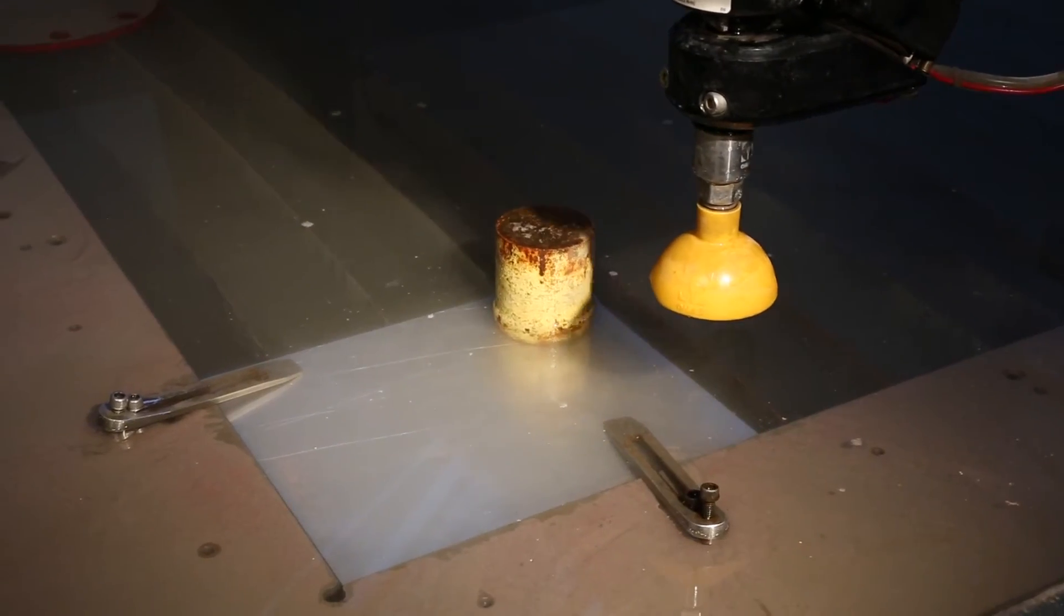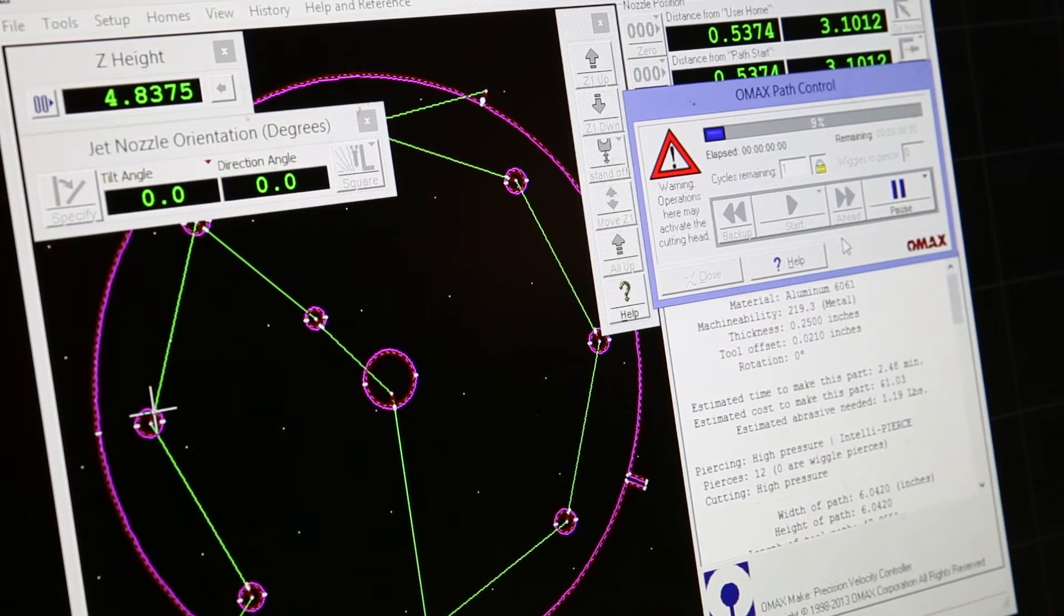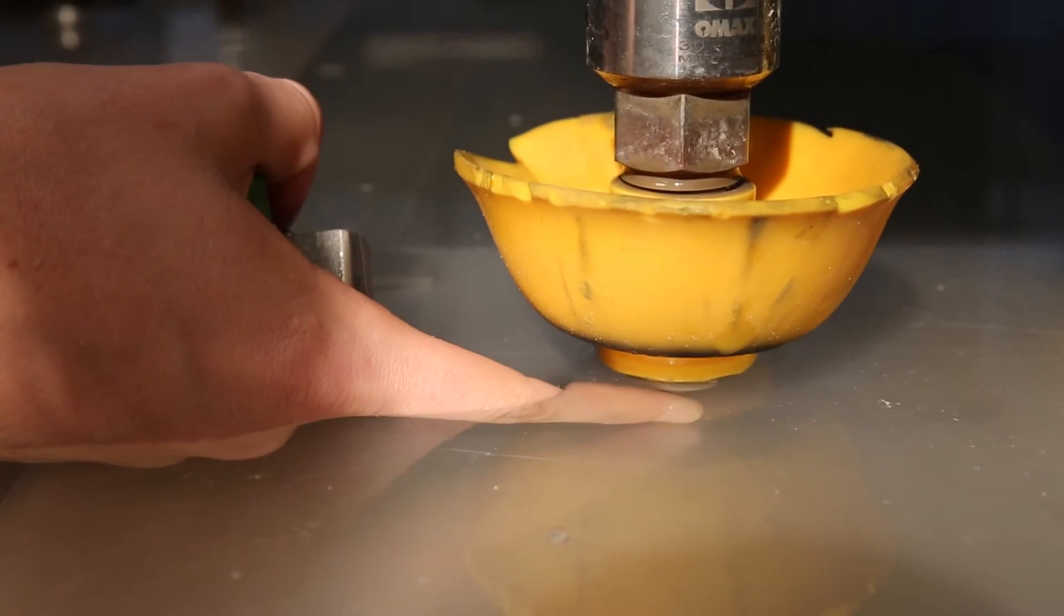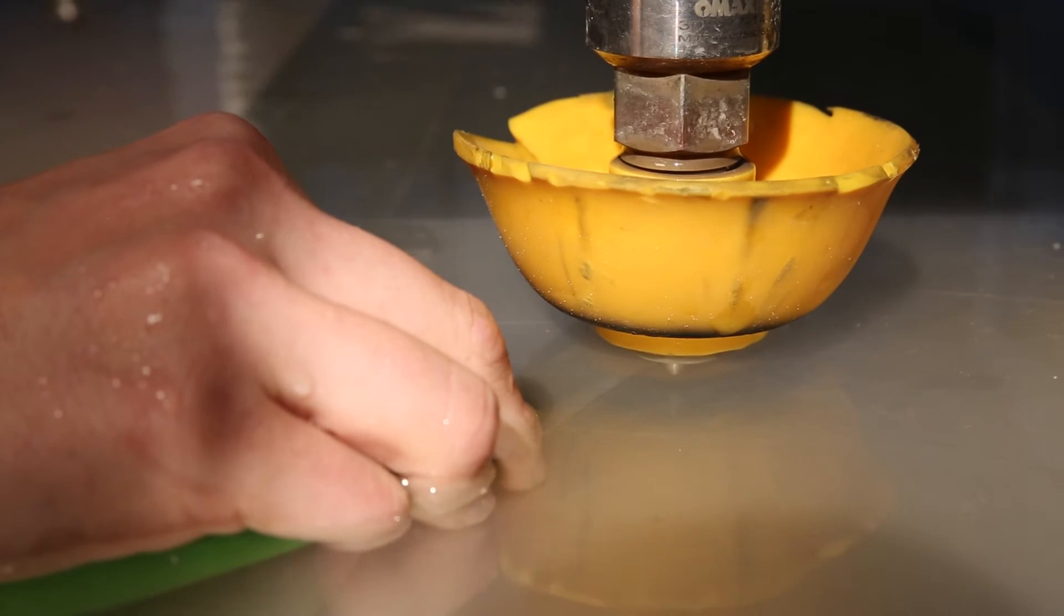Move the nozzle to your desired starting point, and then use the 0x buttons and 0y buttons to zero the WaterJet. Ensure that the WaterJet nozzle is the correct distance away from your part by lowering it until the focusing tool can just slide under the nozzle.